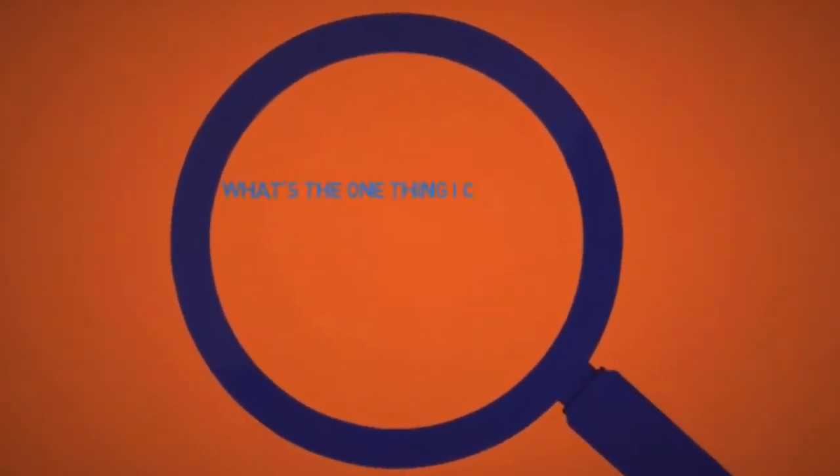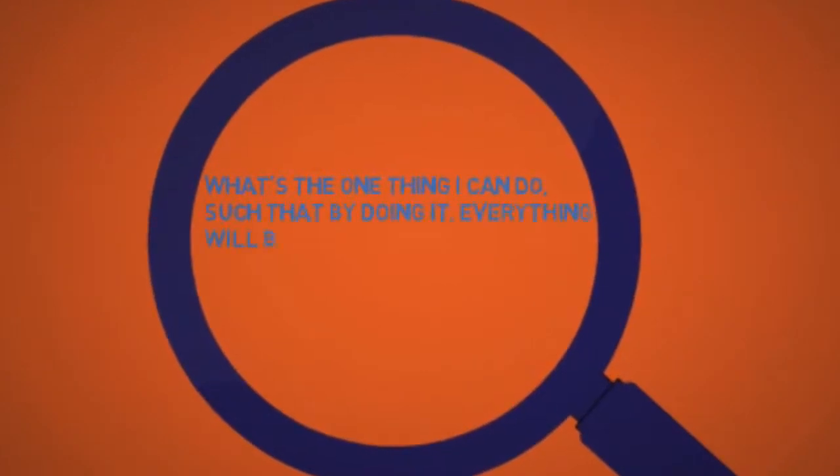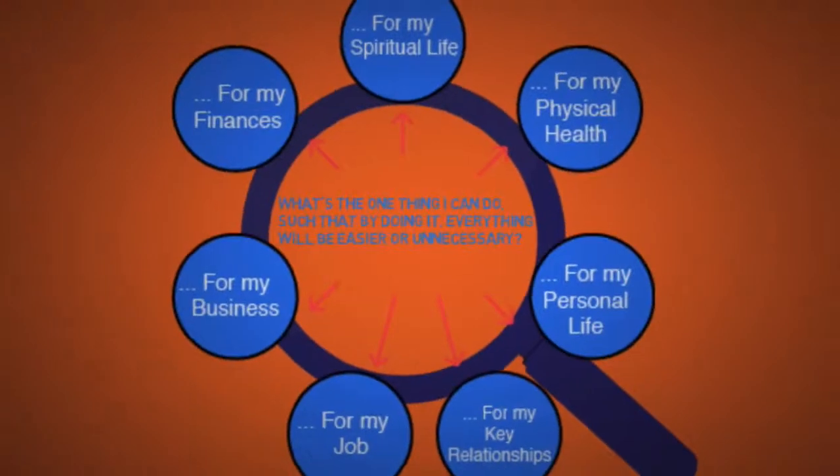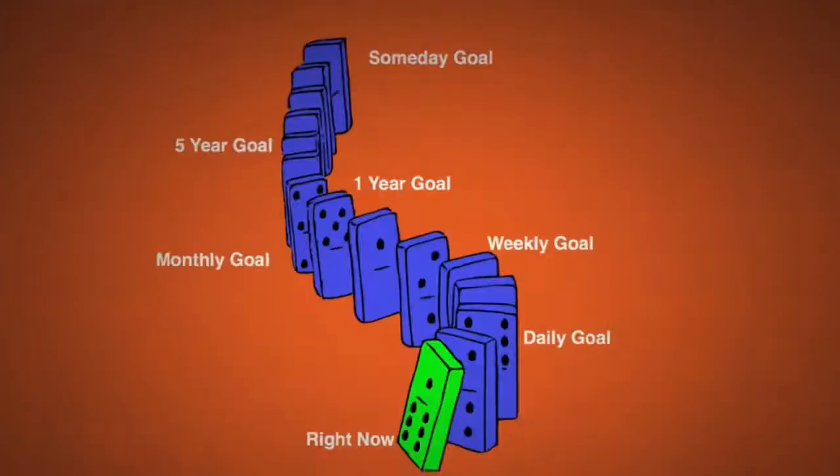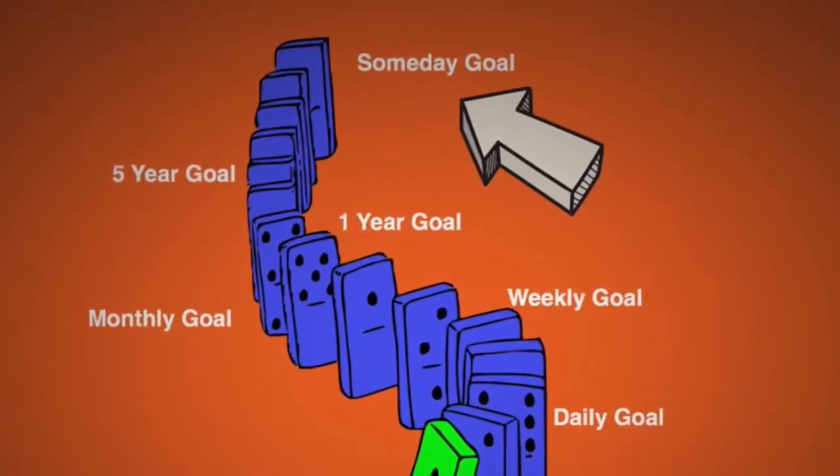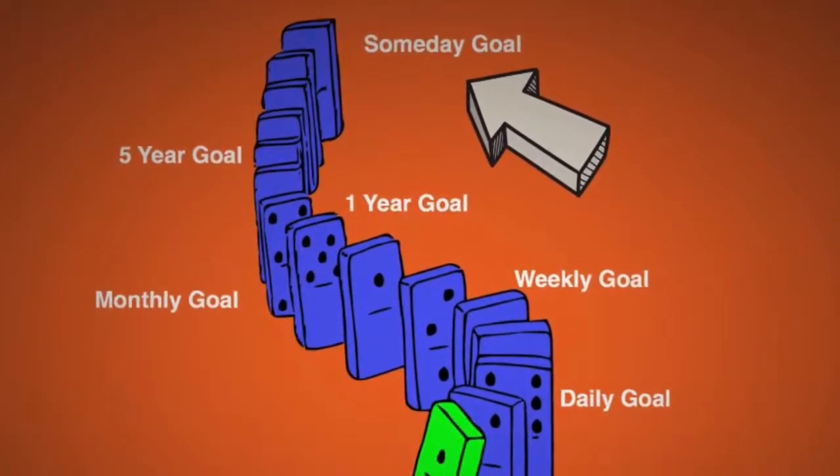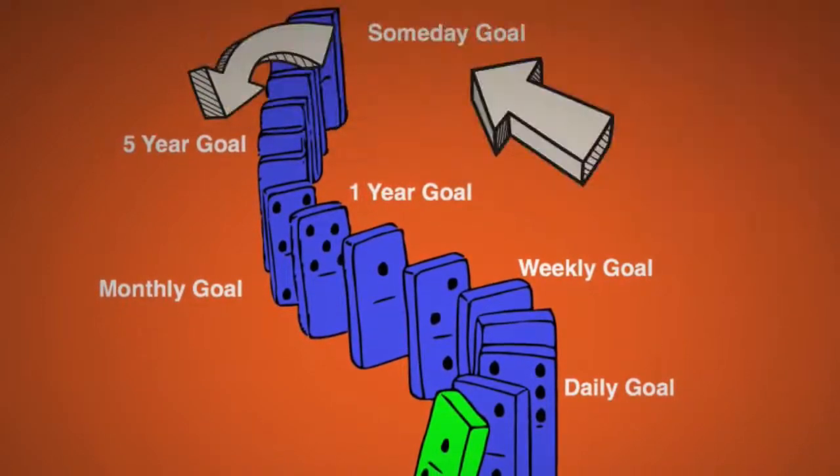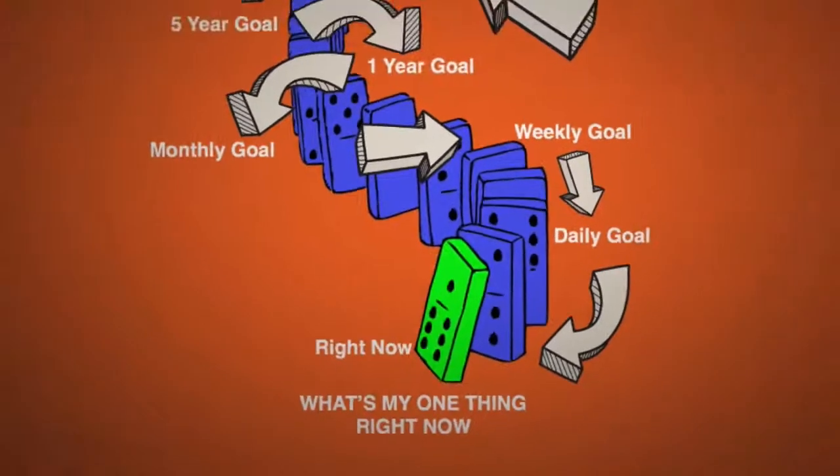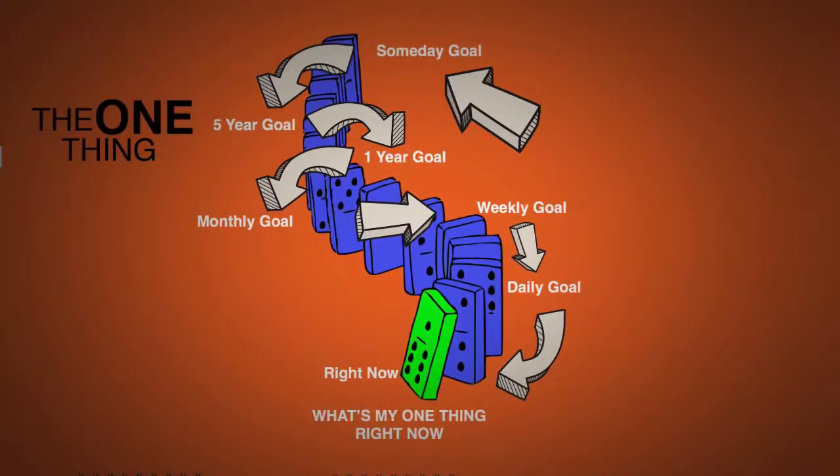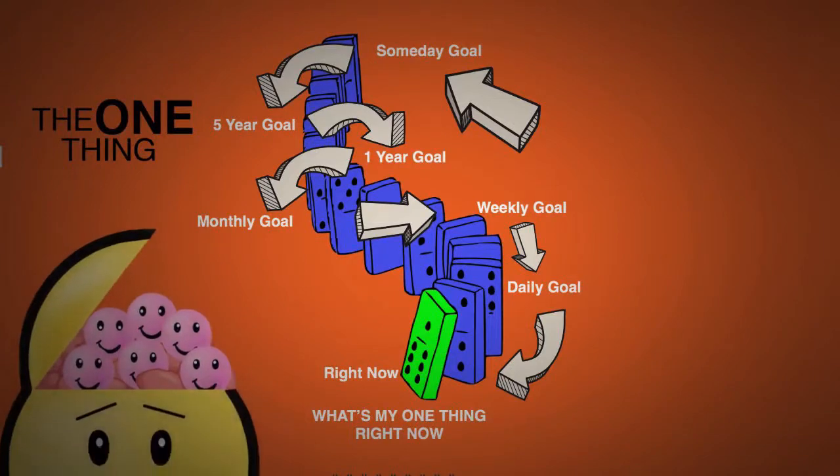So what you want to do is ask yourself this focusing question: What's the one thing I can do such that by doing it, everything else will be easier or unnecessary? You can ask this question for any aspect of your work or personal life, for both short-term and long-term goals. But avoid asking questions like, what do I do next? Instead think big and ask yourself what your someday goal is and then work your way backwards. Ask yourself, based on your someday goal, what is the one thing you can do in the next 5 years? Then based on your 5 year goal, what's the best thing you can do this year? Keep doing this until you have figured out what's the one thing you can do right now. As for me, my one thing I've chosen is to make videos like this and to positively brainwash the world.